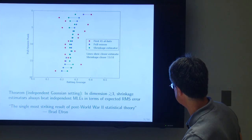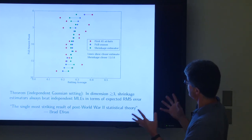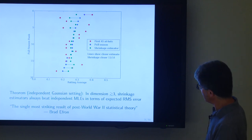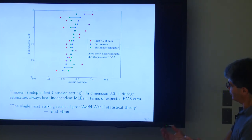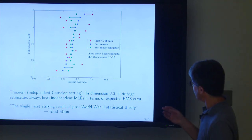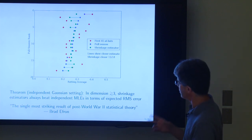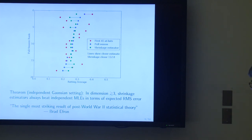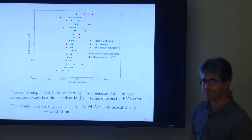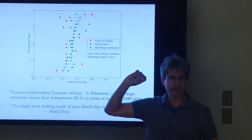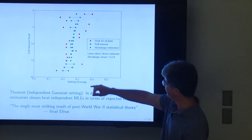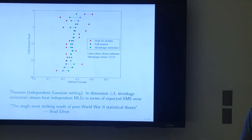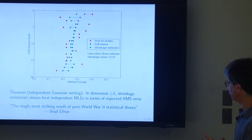Mathematically, what started this as an exciting field was that Stein proved a theorem: in dimensions bigger than three, in this setting where you have a bunch of related quantities measured with normal distribution, this type of estimator can always beat the independent maximum likelihood estimators in terms of root mean squared error. Dimension here is just the number of players — so as long as you're estimating batting averages for more than two or three players, you'll do better by using these strange correlated biased estimators. Brad Efron has described this as the single most striking result of post-World War II statistical theory.